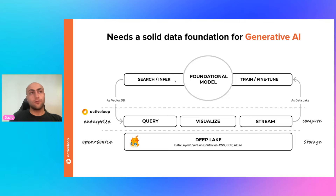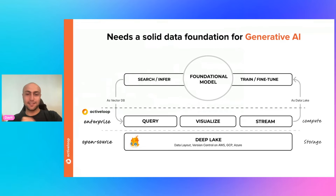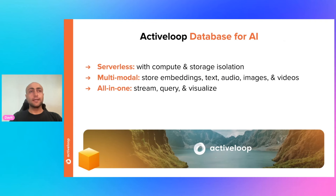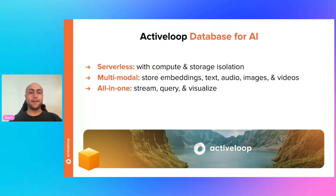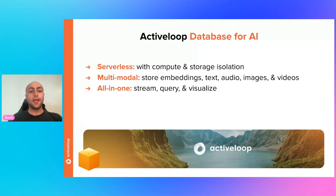On one side, you can run vector search or vector queries on top of your Deep Lake datasets on your own storage at runtime. Once the data is collected, you can use the same datasets to retrain or fine-tune your own large language model. ActiveLoop provides a database for AI — serverless with compute-storage isolation, multimodal so it can store not only embeddings but also text, audio, images, and videos, all in one place where you can stream, query, and visualize data for your generative AI applications.